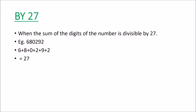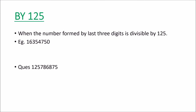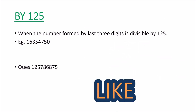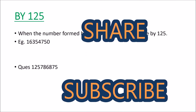Now let us see the divisibility test for 125. Any number is divisible by 125 when the number formed by the last three digits is divisible by 125. For example, if the last three digits are 750, and since 750 is divisible by 125, the whole number is divisible by 125. I have a question for you: check the number on screen for divisibility by 125 and write your answer in the comment box. If you like these tricks, like my video, share it with your friends, and subscribe to my channel. Thank you for watching.